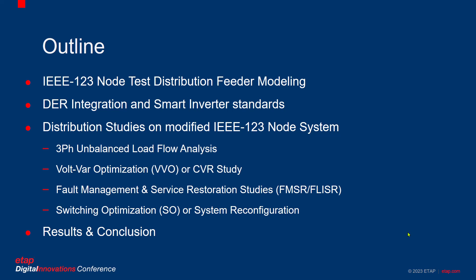In the analysis section, we will be looking into load flow results provided by ETAB and how they match with specifications. Further, we will conduct some optimization and ADMS-related studies such as VVO, also more widely known as CVR, switching reconfiguration or switching optimization, and then fault management and service restoration, also referred to as FLISR. These studies will be done with and without the effects of DER penetration. In the results and conclusions, we will compare our findings and provide some overall comments.